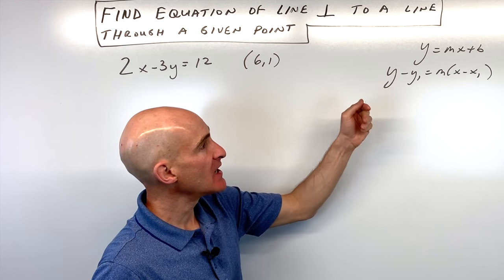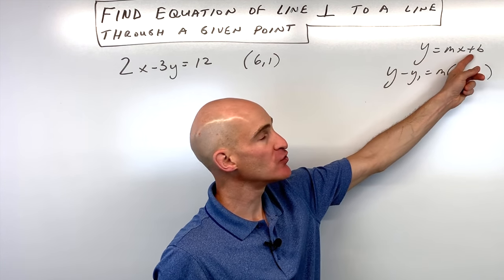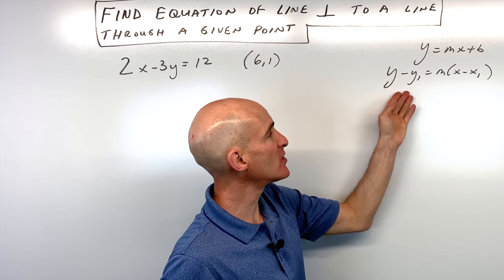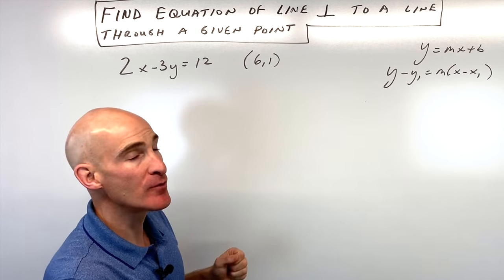I'm going to show you two different methods. As a quick refresher, we've got our two forms of the equation of a line here: y equals mx plus b, as well as the point-slope form. I'll show you both methods.